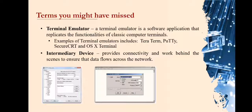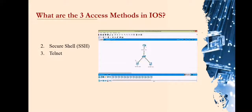The second access method is the secure shell or SSH. SSH is a method for remotely establishing a secure command line interface connection through a virtual interface over a network. SSH is the recommended method for remote management because it provides a secure connection using encrypted password authentication and transport of session data.